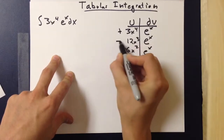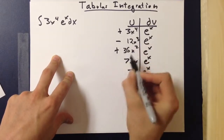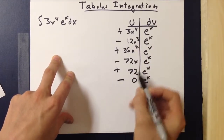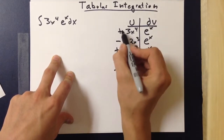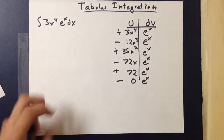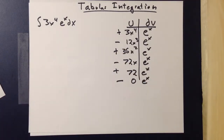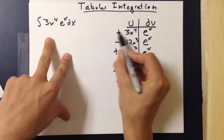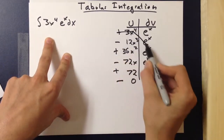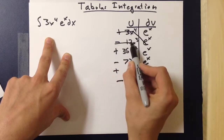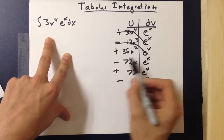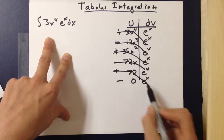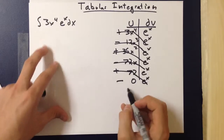So: positive, negative, positive, negative, positive, negative. Remember that you always start on positive. Then you just make tic-tac-toe diagonal connections like that.